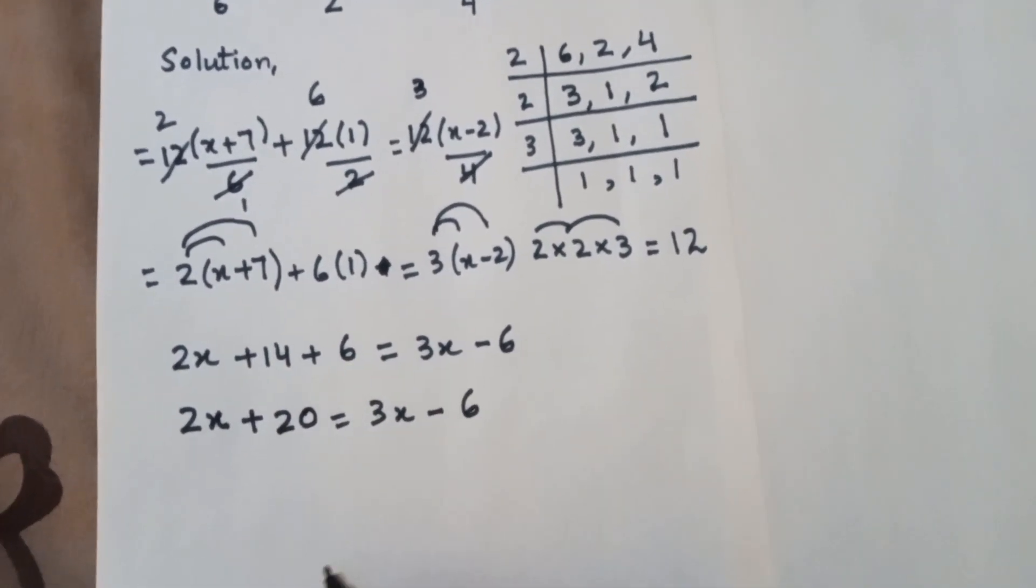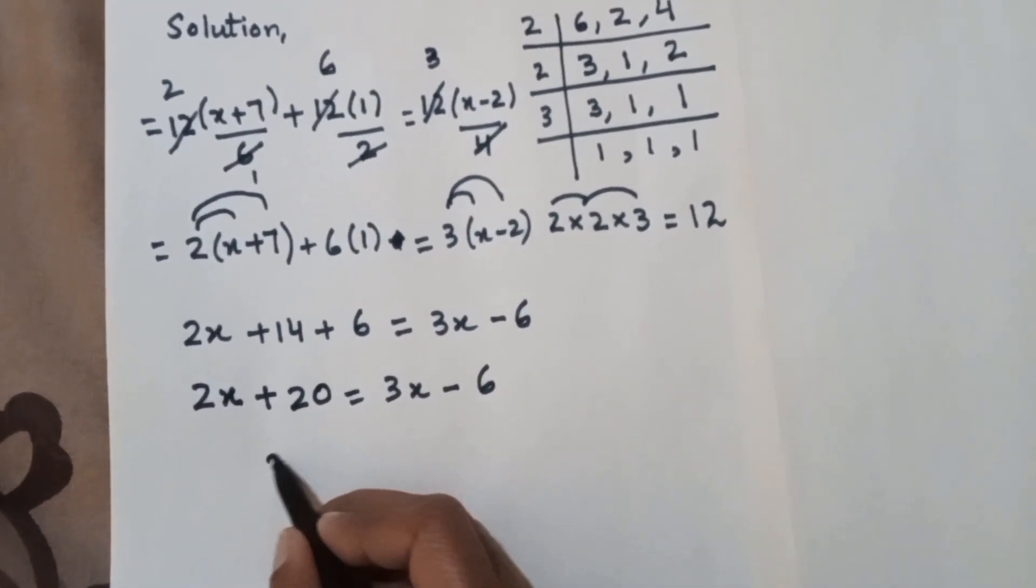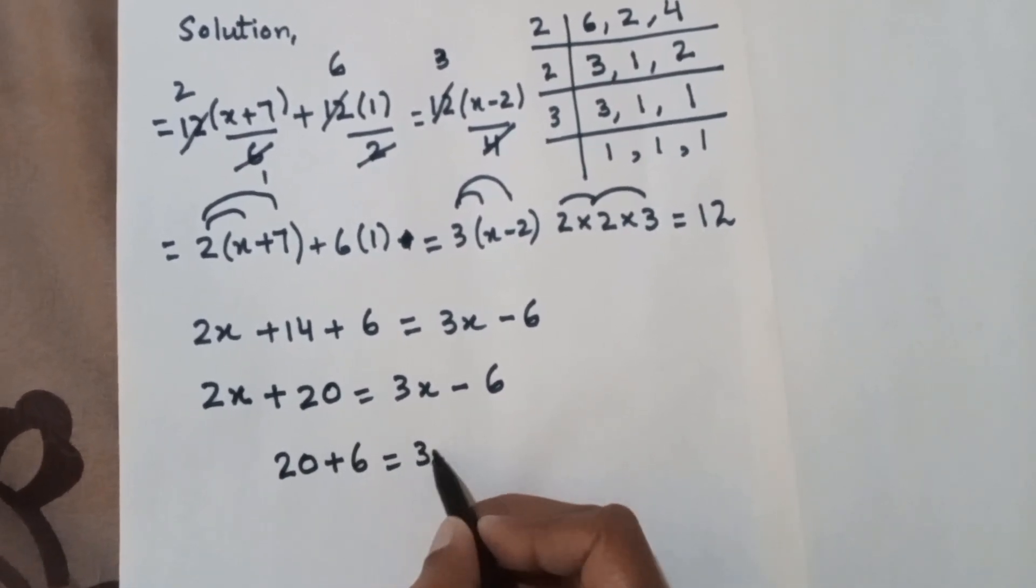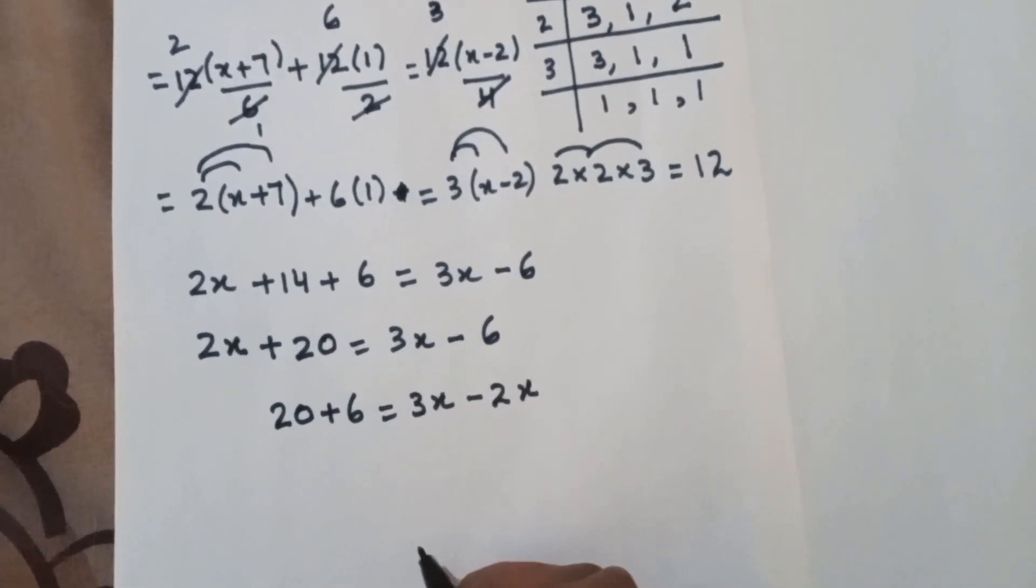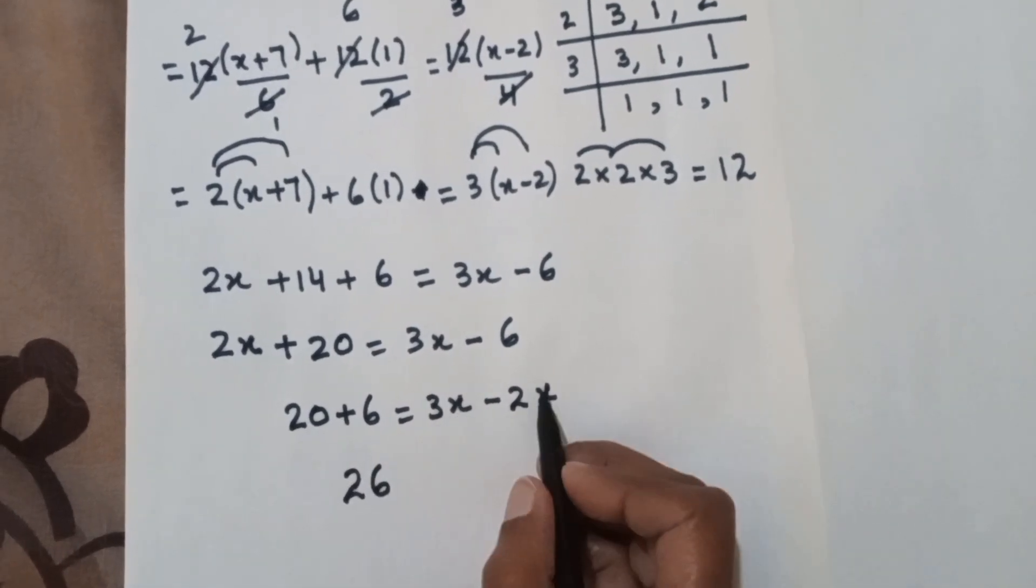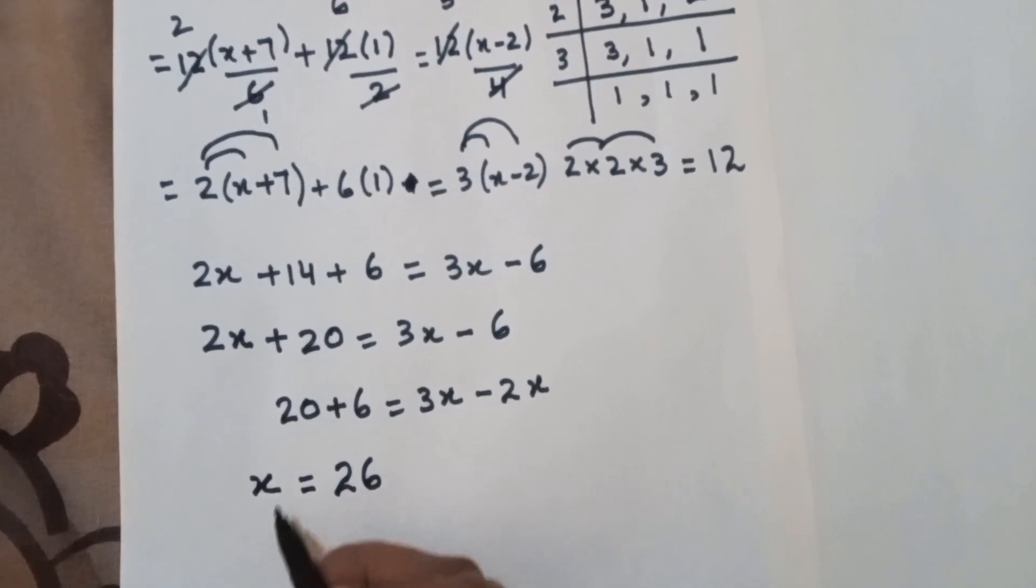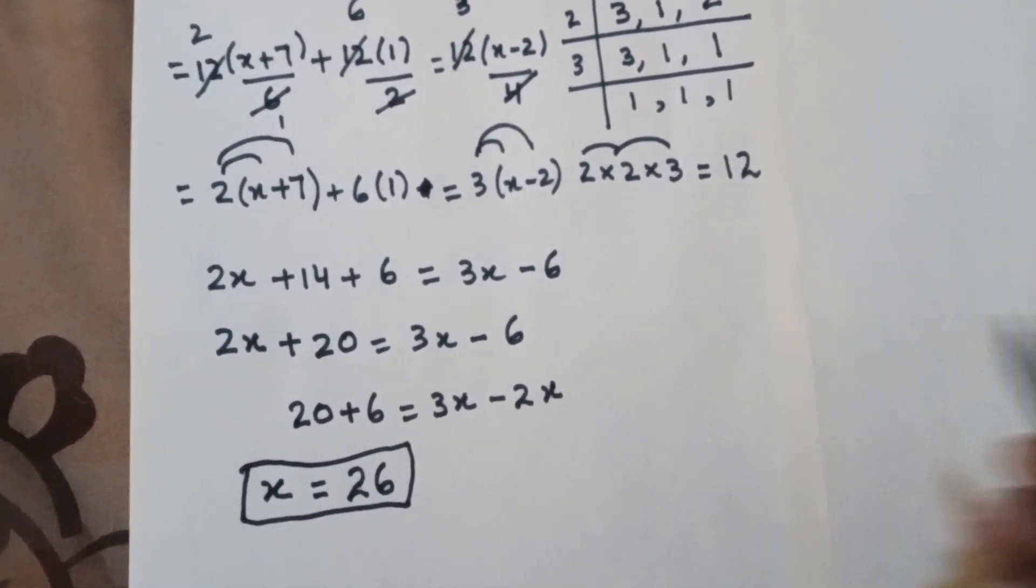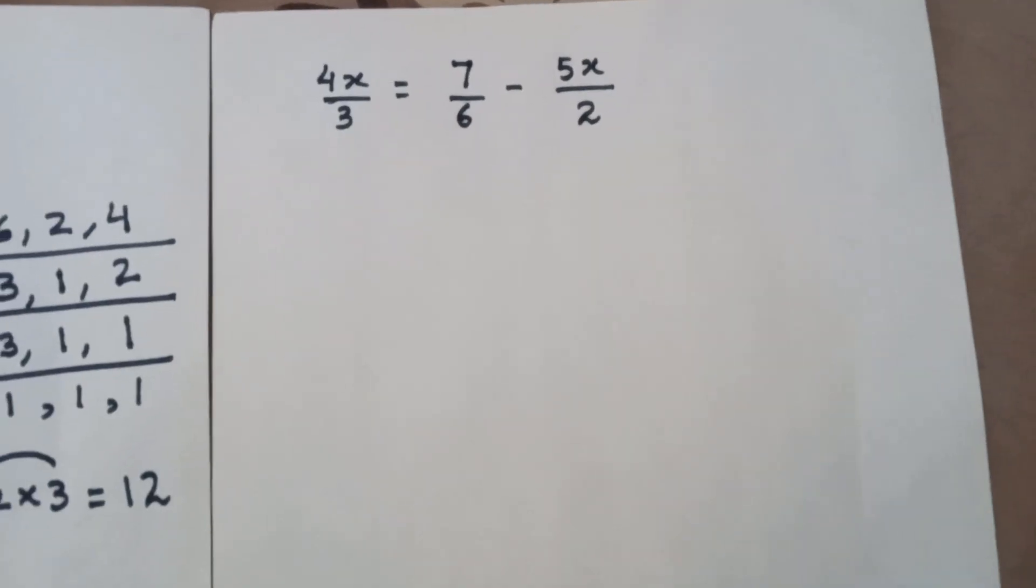Now we are seeing like terms or x values we have to write on one side and constants we have to write here. Here 20 plus 6 is equal to 3x minus 2x. 20 plus 6 becomes 26, and 3x minus 2x is x, so we have solved this linear equation and found out the value of x. Now we are going to solve another question.